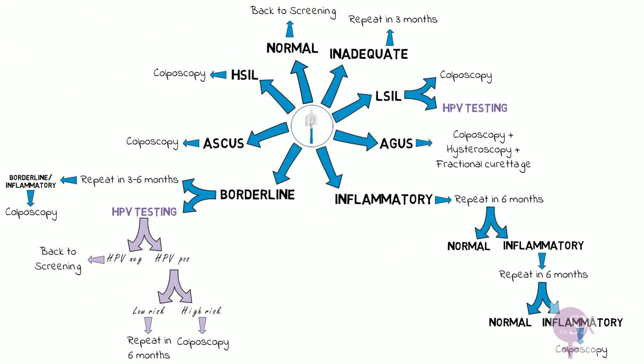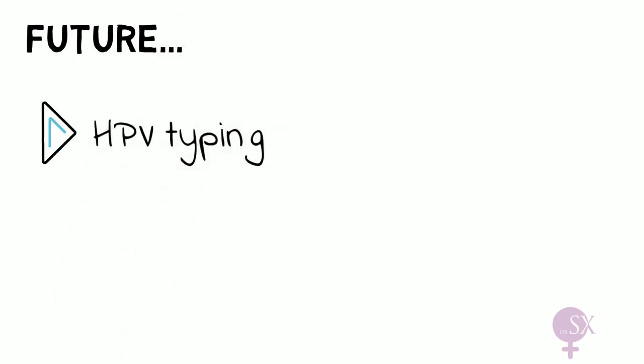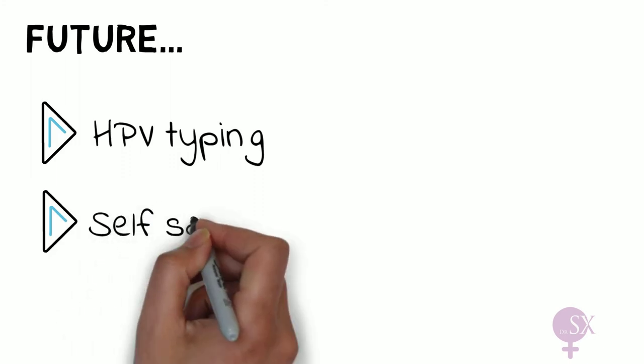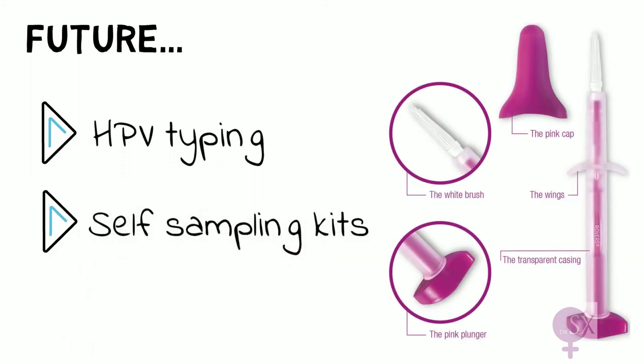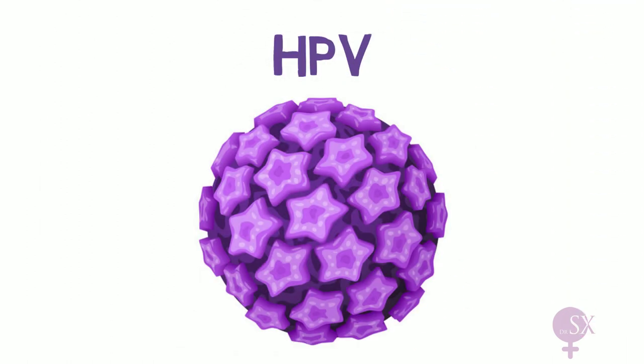That's an overview of the management of cervical smears. Looking to the future, there have been discussions about HPV typing as the sole screening test, due to its higher sensitivity for detecting CIN when compared to cytology. There have also been proposals of a self-sampling HPV kit, making the screening process much easier. Of course, we can't discuss cervical pathologies without a mention of HPV, so stay tuned for the next video on HPV.